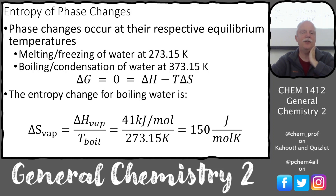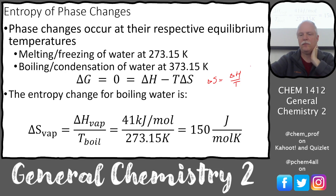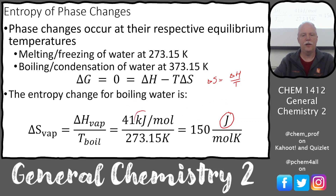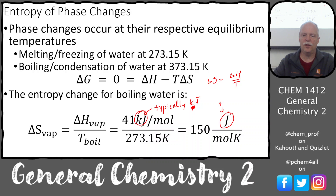Phase changes occur at their respective equilibrium temperatures. For water, melting and freezing is at equilibrium at 273.15 K at one atmosphere; boiling and condensation at 373.15 K. We can use the Gibbs energy equation to solve for the entropy of those transitions. The entropy change for boiling water is ΔS = ΔH_vaporization / T — solving for entropy gives a positive value of about 150 J/mol·K. Note: entropies are typically in joules, while enthalpies and Gibbs energies are in kilojoules — don't mix those units.